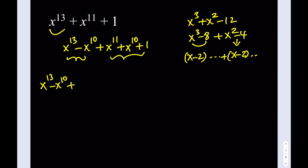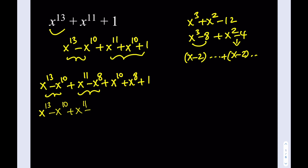For x to the 11th power, I'm going to subtract x to the 8th from it — maybe you've already seen what I'm doing — and then add the x to the 8th back. I'm hoping that x to the 10th power something is factorable, and hopefully these two are factorable and have a common factor. If you take out x to the 10th, you get x to the 3rd minus 1. If you take out x to the 8th, you get the same thing. So these two definitely have a common factor.